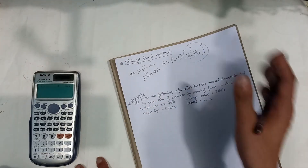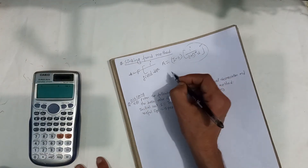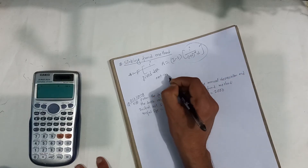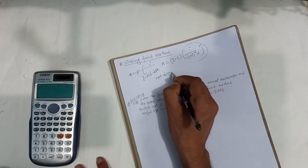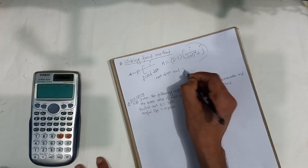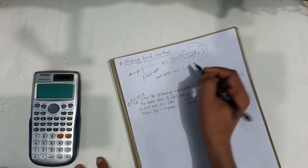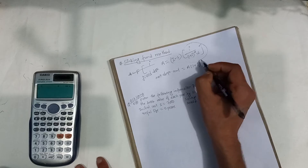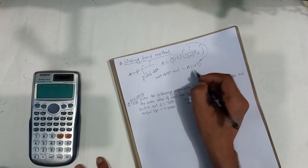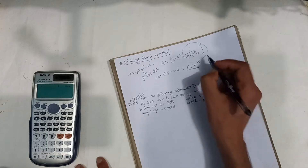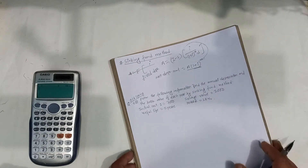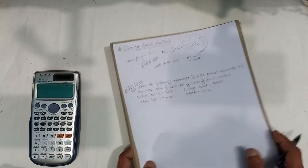Each year, the net depreciation amount will be increased. This amount will be accumulated, and the interest rate will be calculated on the accumulated amount each year.